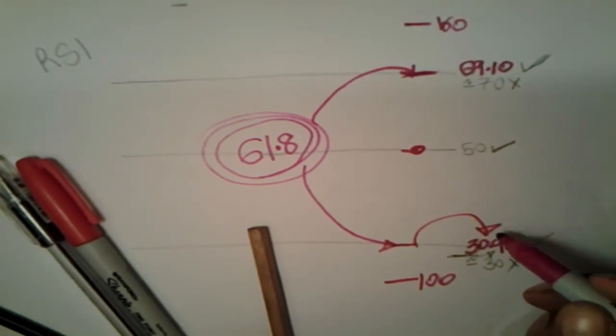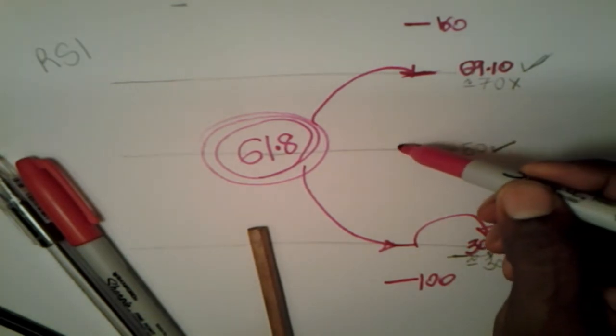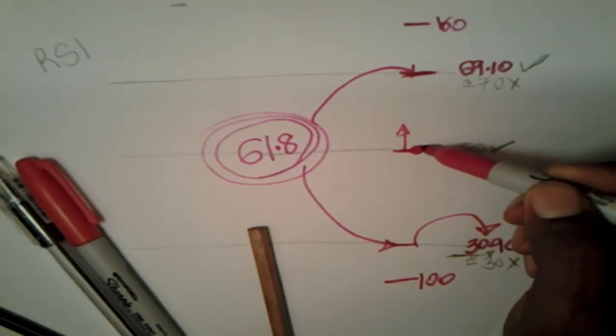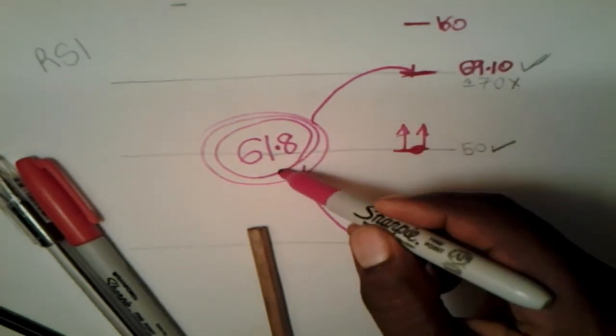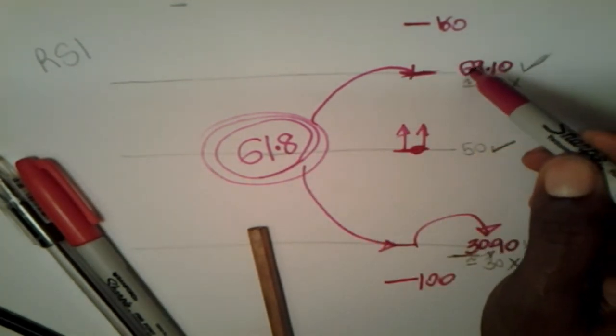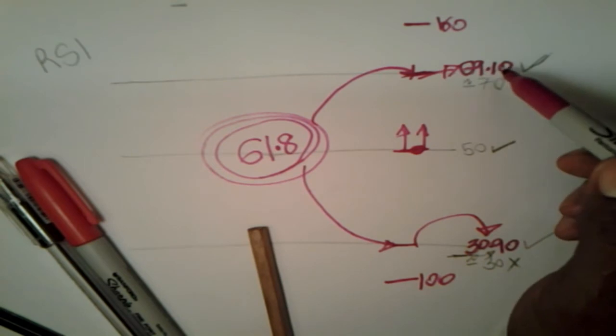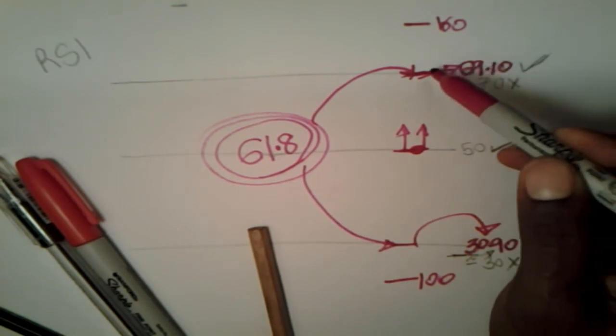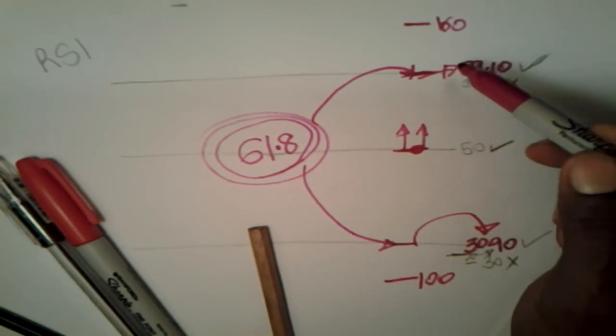So in other words, when you're bullish above 50 on the RSI, 61.8 shows up at this number here, 69.10. So that's why you find that stocks go crazy to the upside when they move above this number, 69.10, which is actually 61.8 but when put above 50.